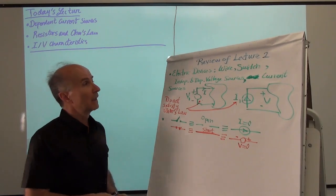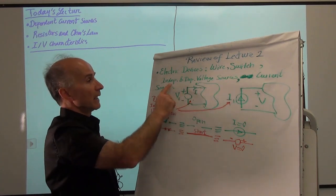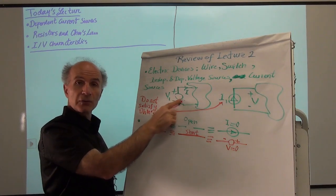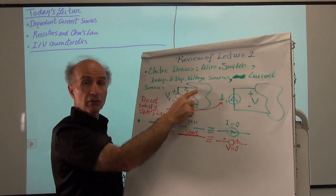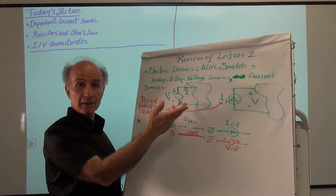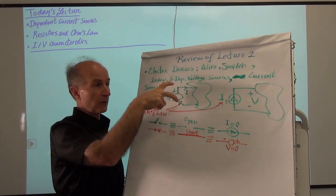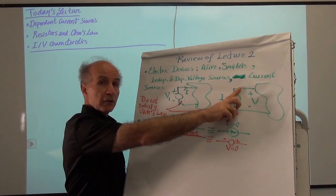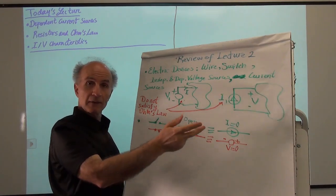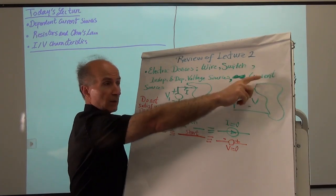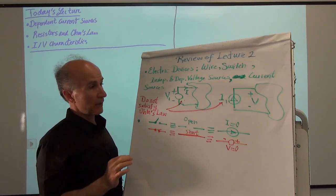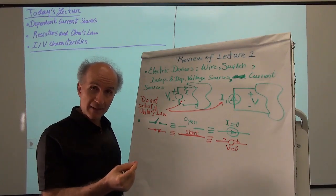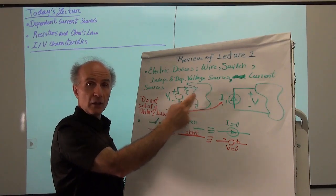We talked about electric devices such as wires, switches, independent and dependent voltage sources, and current sources. In particular, we saw that a voltage source is a two-terminal device that can deliver any current and maintain its voltage — the current can be positive or negative, and an ideal voltage source wants to enforce this voltage in all conditions. For a current source, on the other hand, it wants to push a certain amount of current regardless of the voltage that develops. That voltage could be positive or negative, and this current source always wants to push a current equal to I1 in this direction into this circuit. It's important to understand that neither of these satisfies Ohm's law.